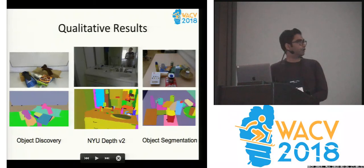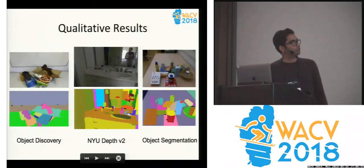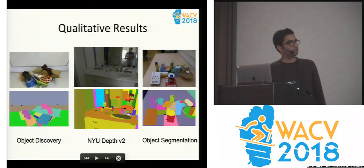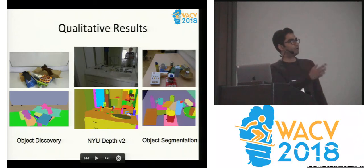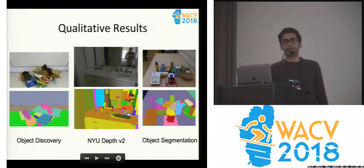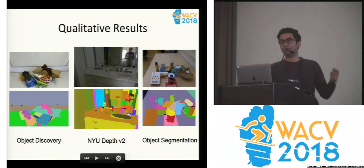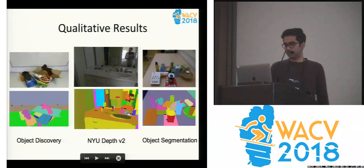The qualitative results are more interesting. The middle image is the most impressive — it is actually a mirror reflection of the objects, and you can see that even the objects in the mirror reflections have been delineated quite well.